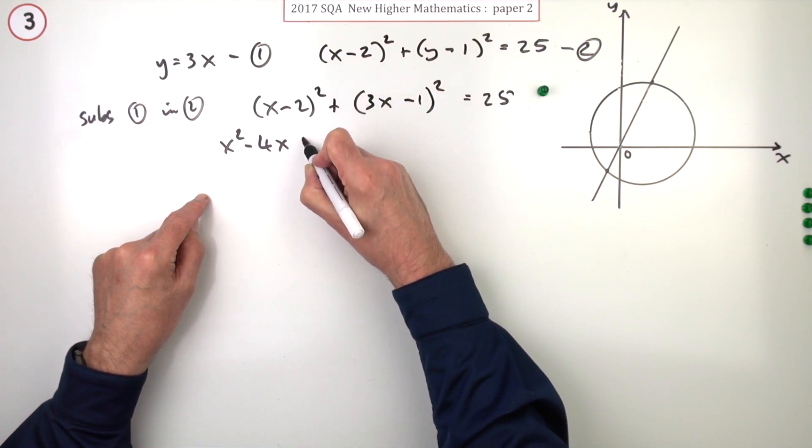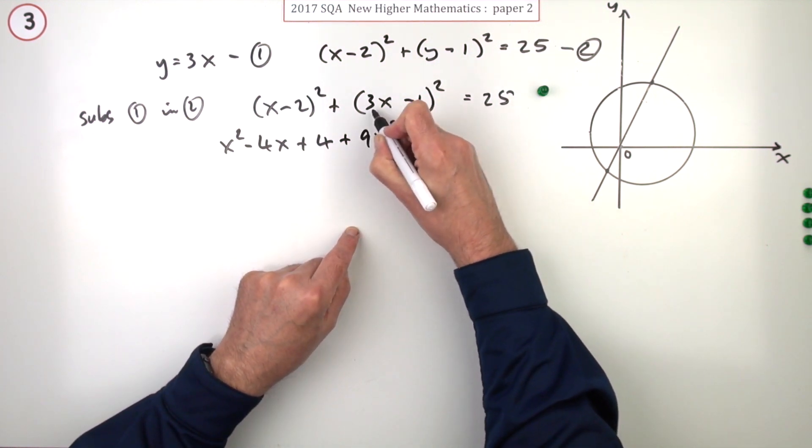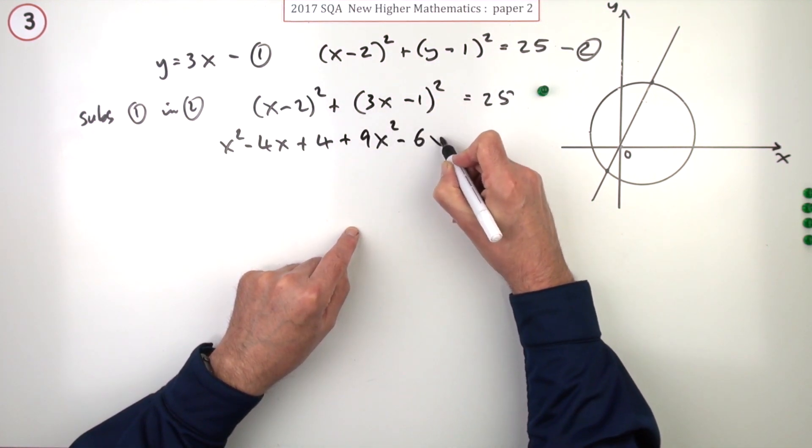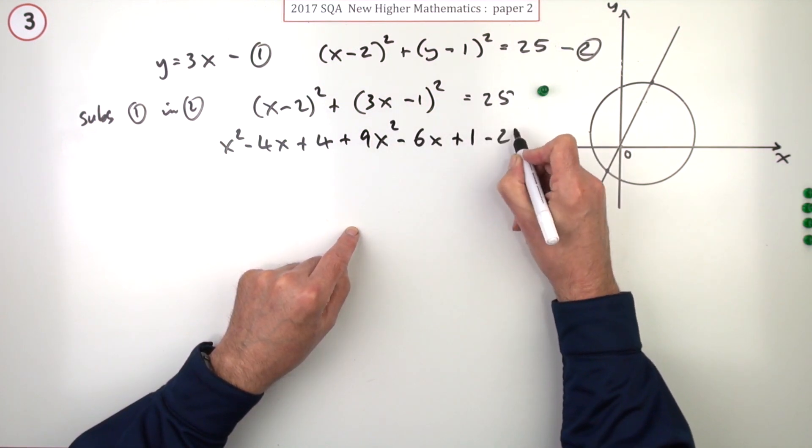Same again here: square the first gives 9x², twice the product will be negative 6x, doubling it, plus one. You may as well bring the 25 over at the same time to equal zero.